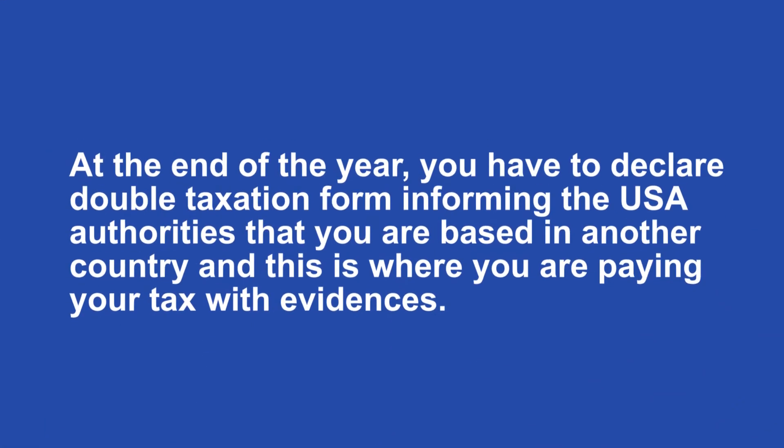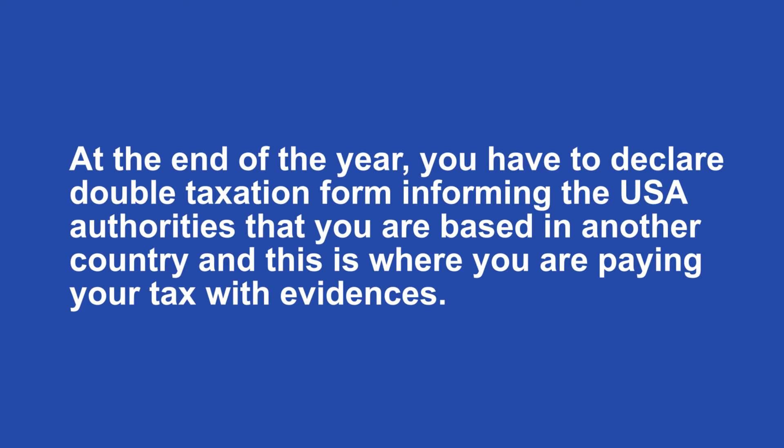For example, if you are based in an offshore country with less than 0.5% income tax, and that country has a treaty agreement with the USA, you can avoid paying tax in the USA completely and only pay 0.5% or less in your country of residence. At the end of the year, you do have to declare a double taxation form informing the US tax authorities of which country you're based in, where you're paying tax, and provide evidence by filing a form or two. This is something you need to speak to your CPA about, or you can speak to one of our advisors at Sterling's Global.